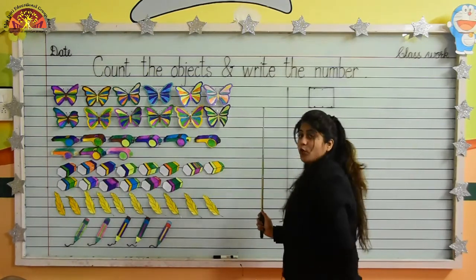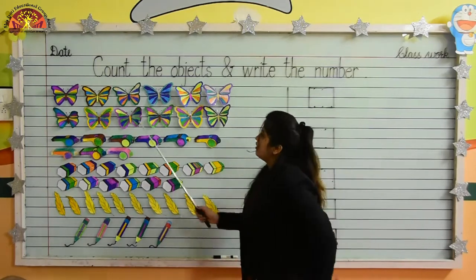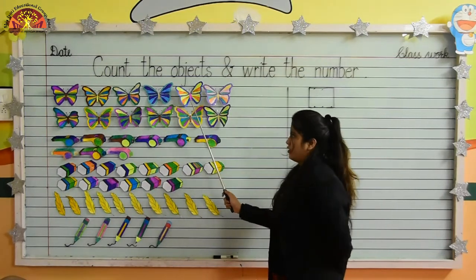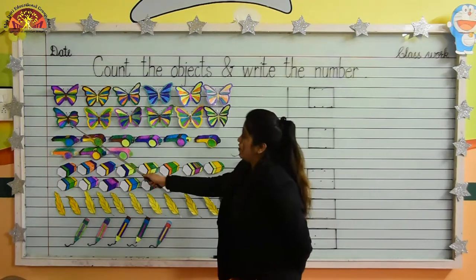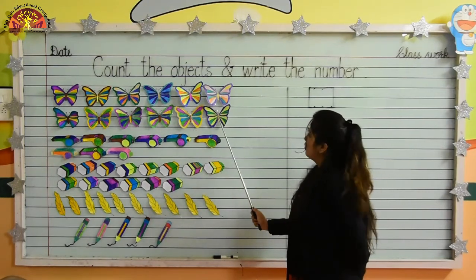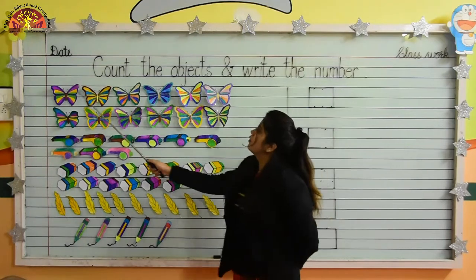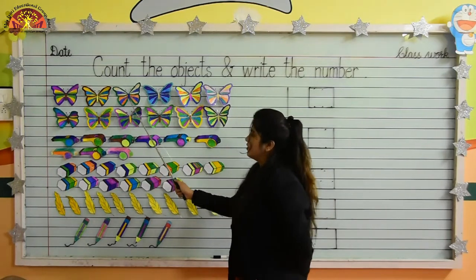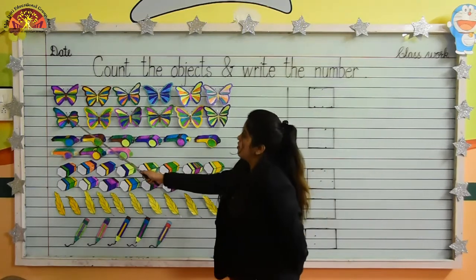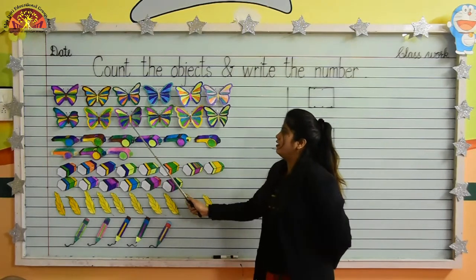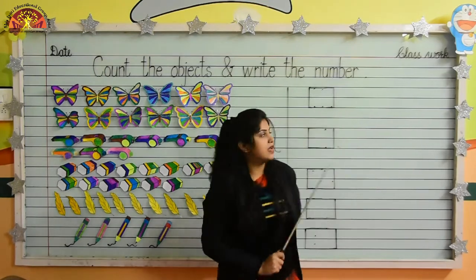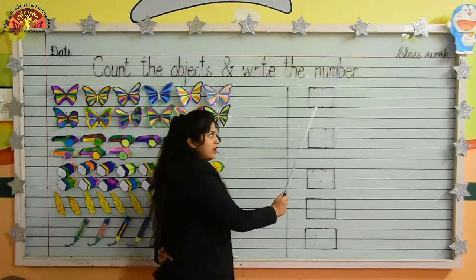Kids, tell me how many butterflies are there? Let's count with me: 1, 2, 3, 4, 5, 6, 7, 8, 9, 10, 11, 12. Again: 1, 2, 3, 4, 5, 6, 7, 8, 9, 10, 11, 12. Kids, now we will write numeral 12 in this box.